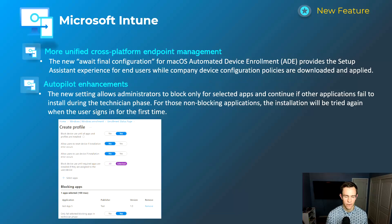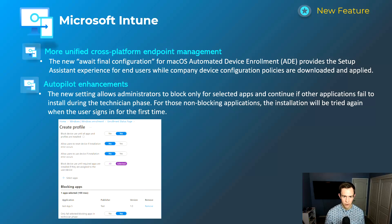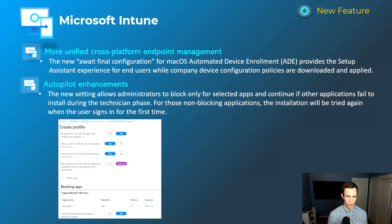Shifting into Microsoft Intune — the first one is related to macOS management. If you're familiar with the out-of-box autopilot settings you can configure for Windows devices, they're extending that into macOS with automated device enrollment configuration. It gives you the ability to delay the user from interacting with the device until certain things have downloaded — apps, configuration profiles, things like that. That's why they call it "wait final configuration," which is pretty cool.